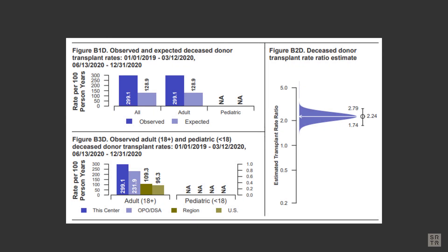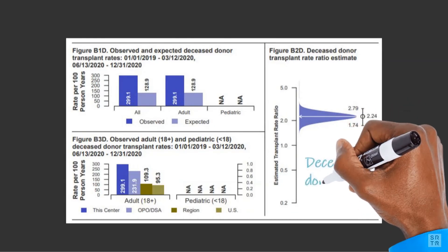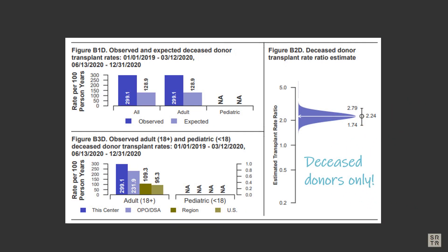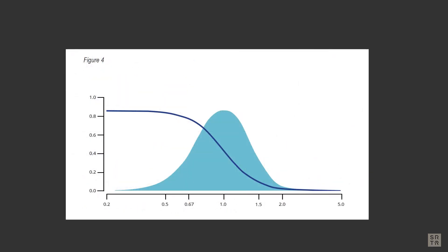The five-tier assessment for getting a transplant faster is derived from the estimated transplant rate ratio, as reported in Figure B2D of the program's PSR. For kidney and liver programs, the transplant rate ratio is based on deceased donor-only transplants, as described in the SRTR analytic methods for the program-specific reports. Therefore, this metric provides a measure of the rate at which the program finds deceased donor organs for its candidates. The process for assigning a tier to the transplant rate ratio is the same as described previously, with a few minor differences.